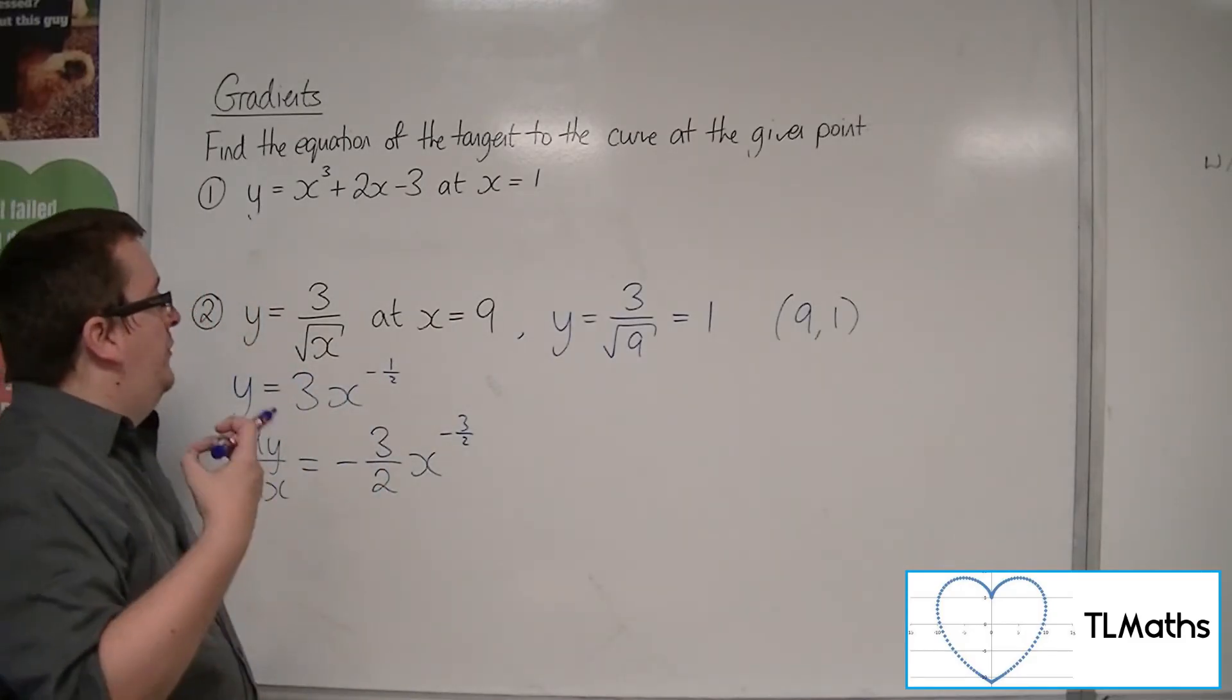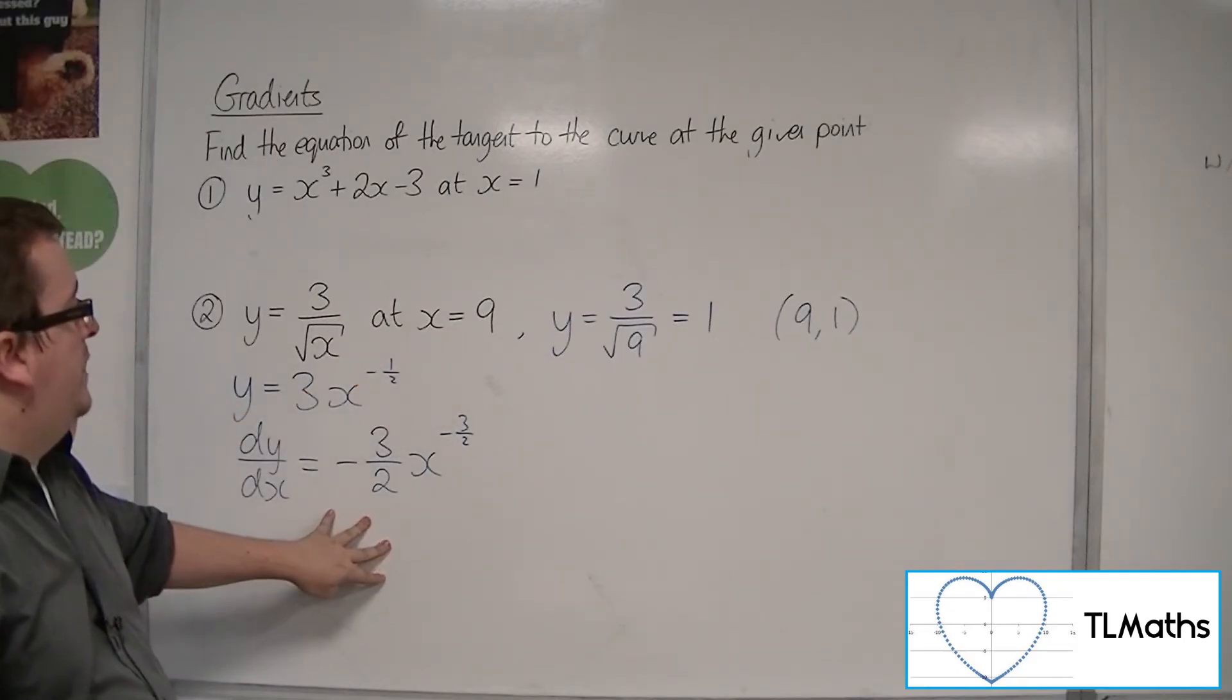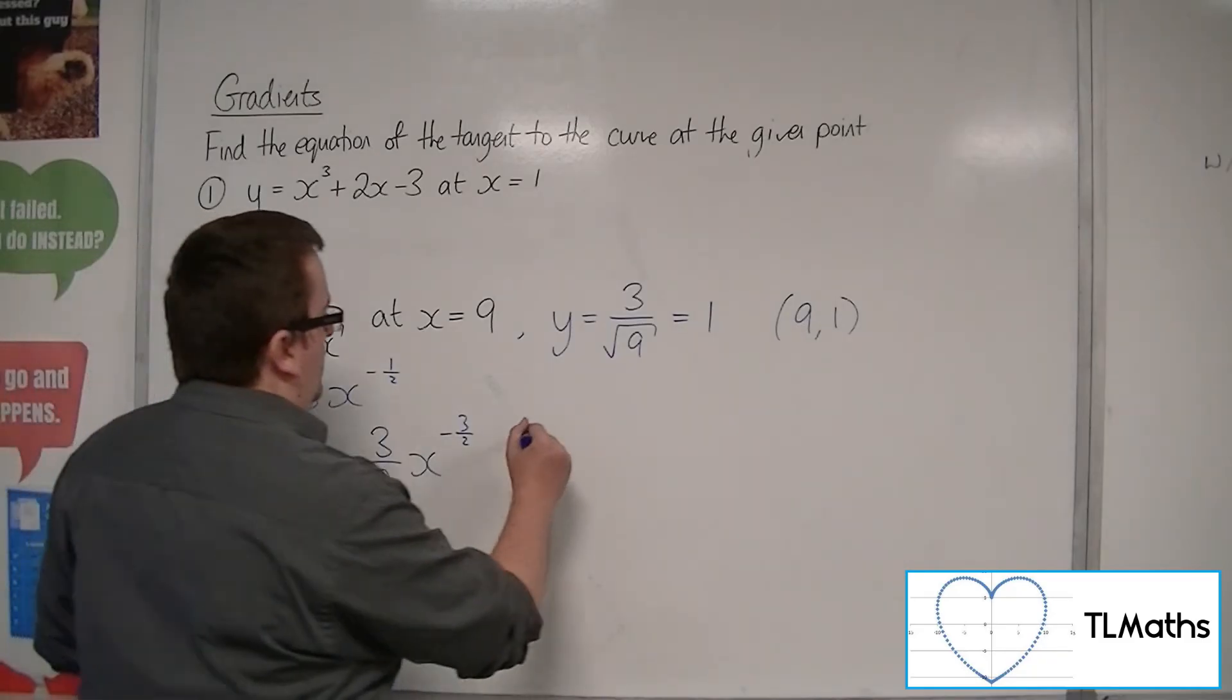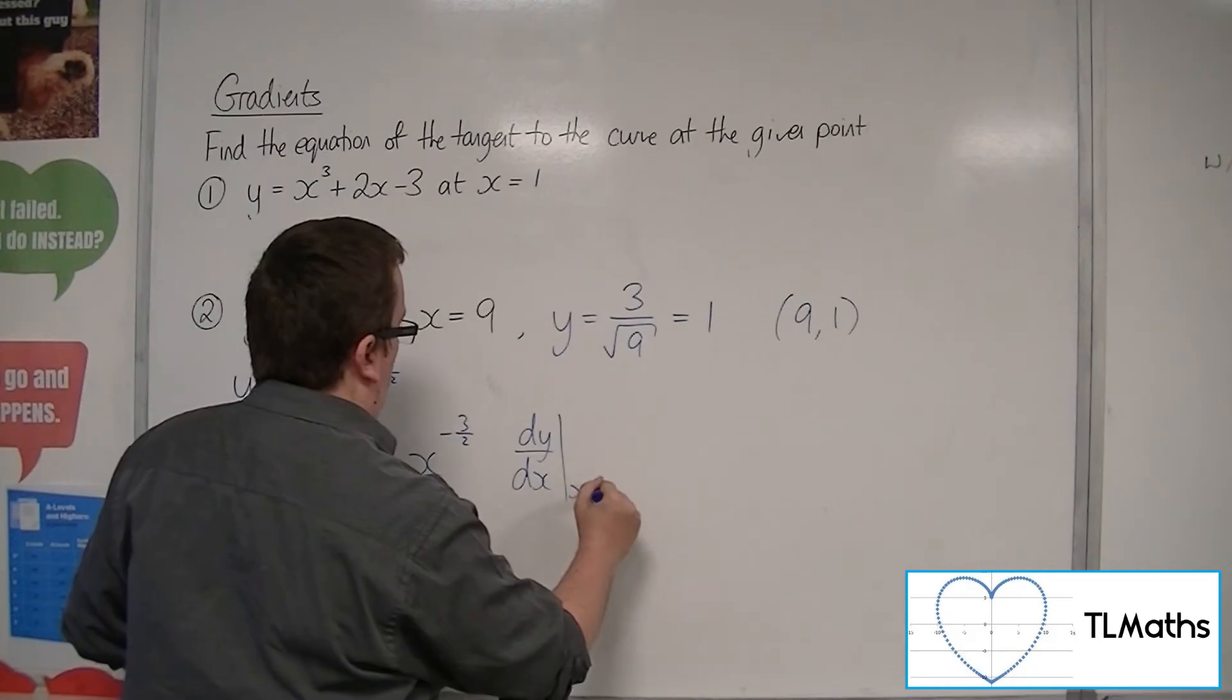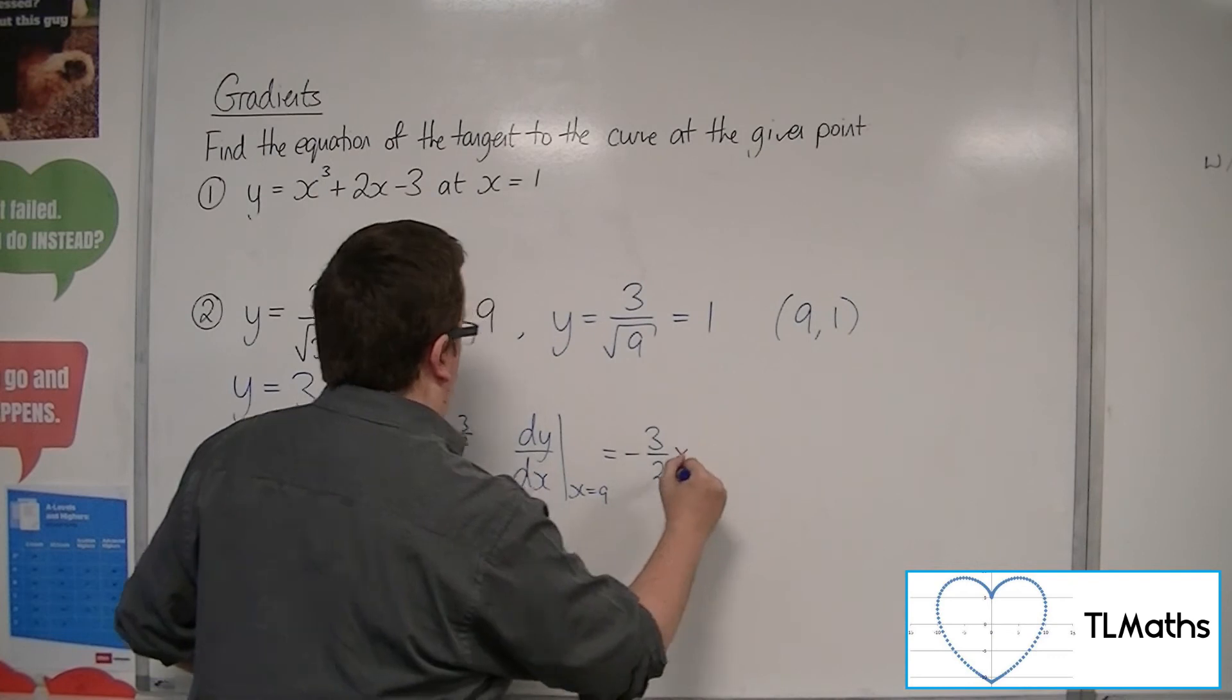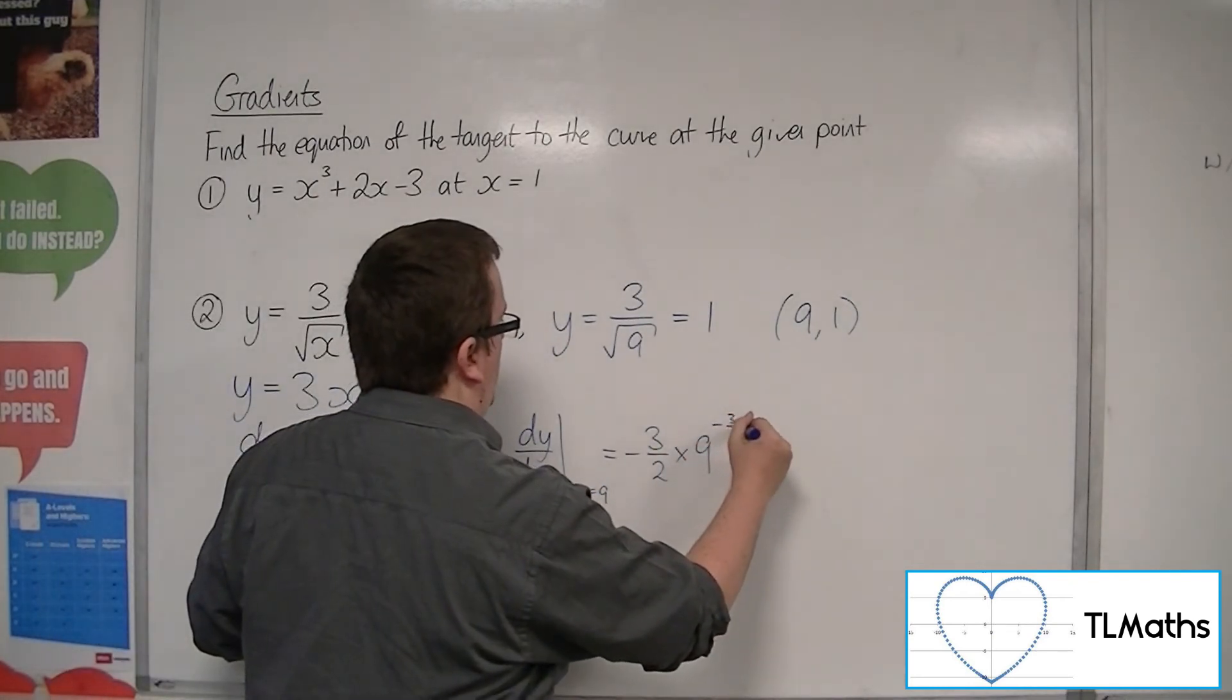And now I need to substitute in x equals 9. I need to evaluate the gradient function when x equals 9 to give me the gradient of the tangent. So dy by dx, when x equals 9, is equal to minus 3 halves times 9 to the minus 3 halves.